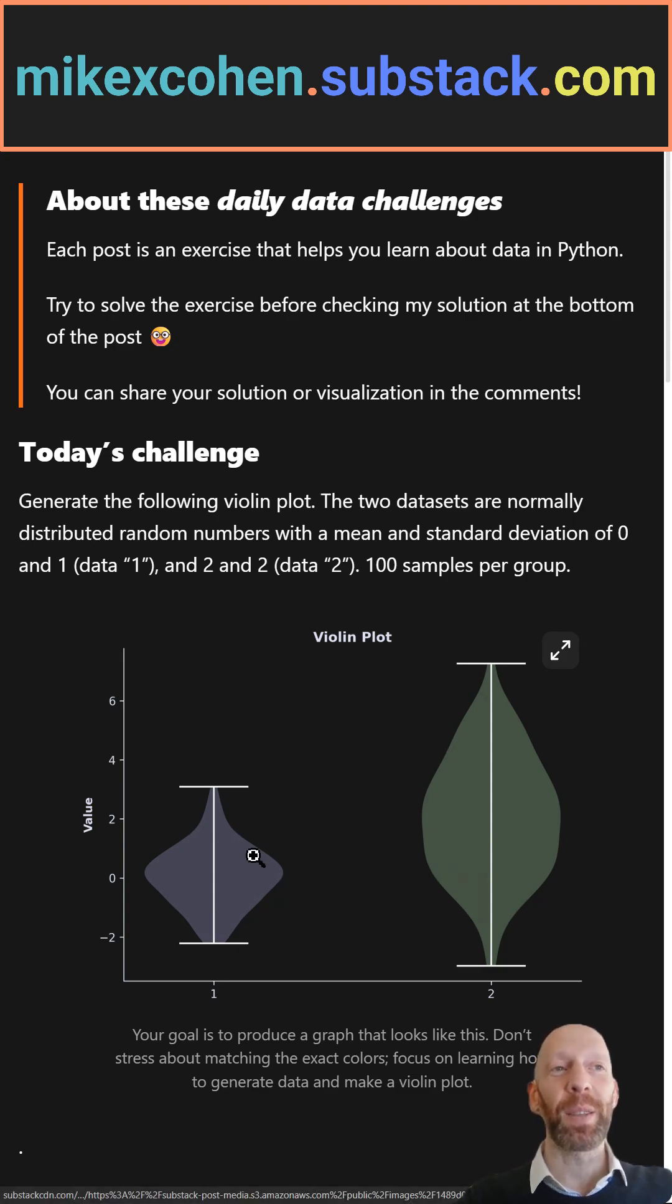Here we have two data sets. Both are made up of 100 samples of randomly drawn numbers from a normal distribution. This data set has a mean of zero and a standard deviation of one, and this data set has a mean of two and a standard deviation of two.